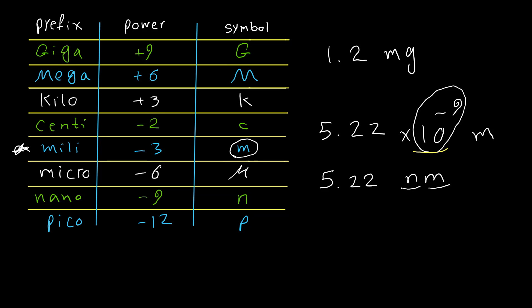Here is another example: 8.9 times 10 to positive 9 Hertz. 10 to positive 9 means giga, so I can just write the symbol for giga here. Then it's going to be 8.9 gigahertz.